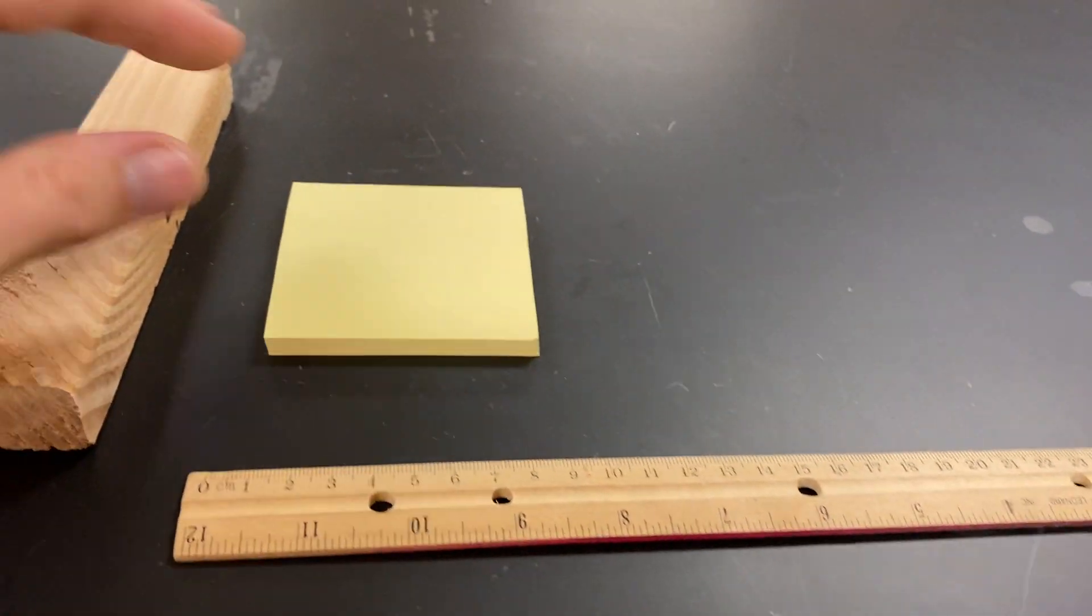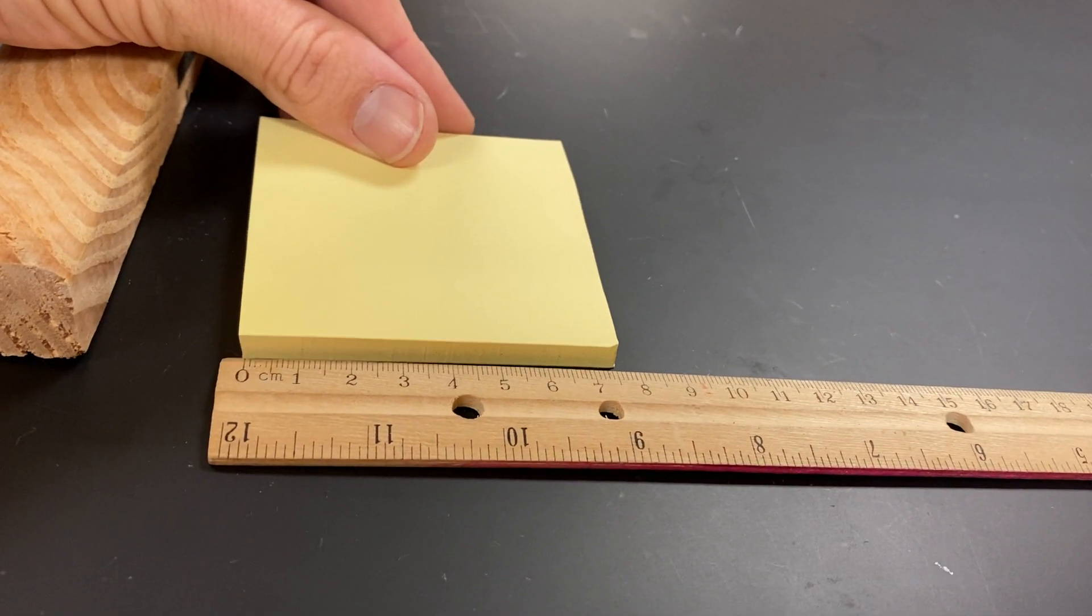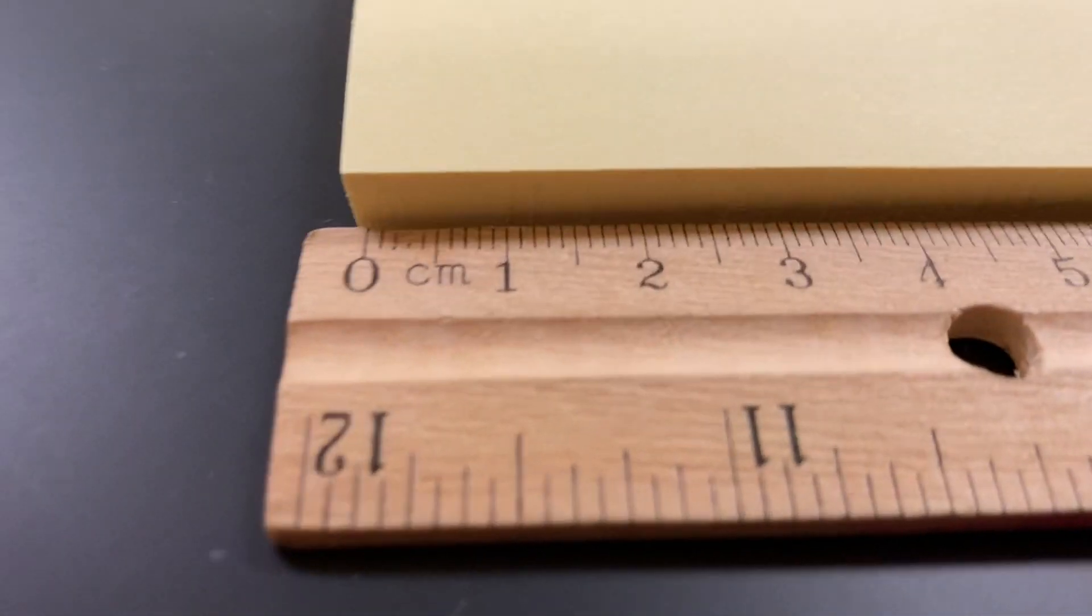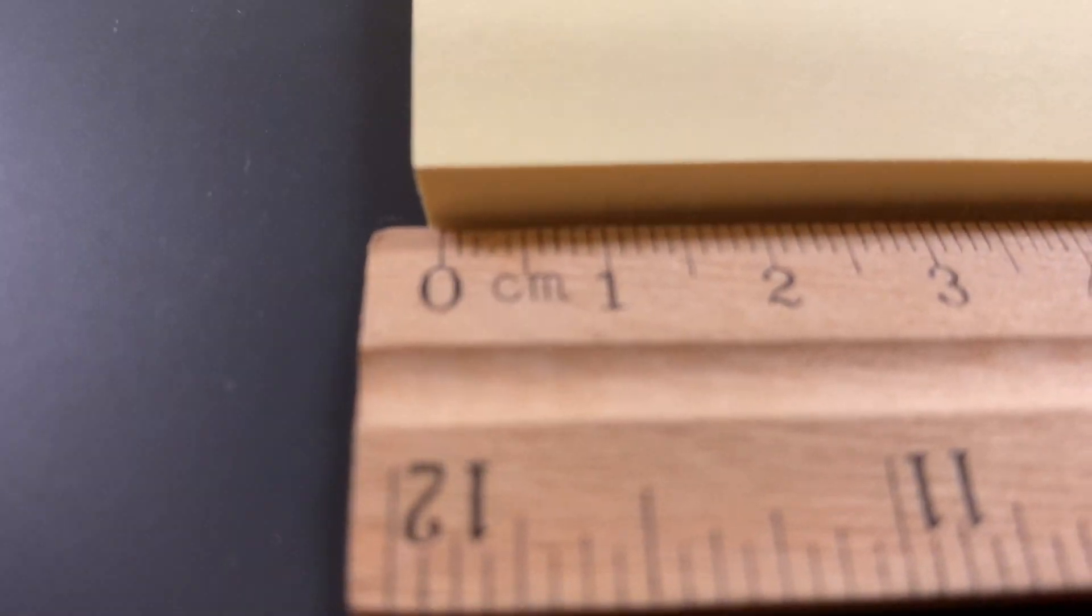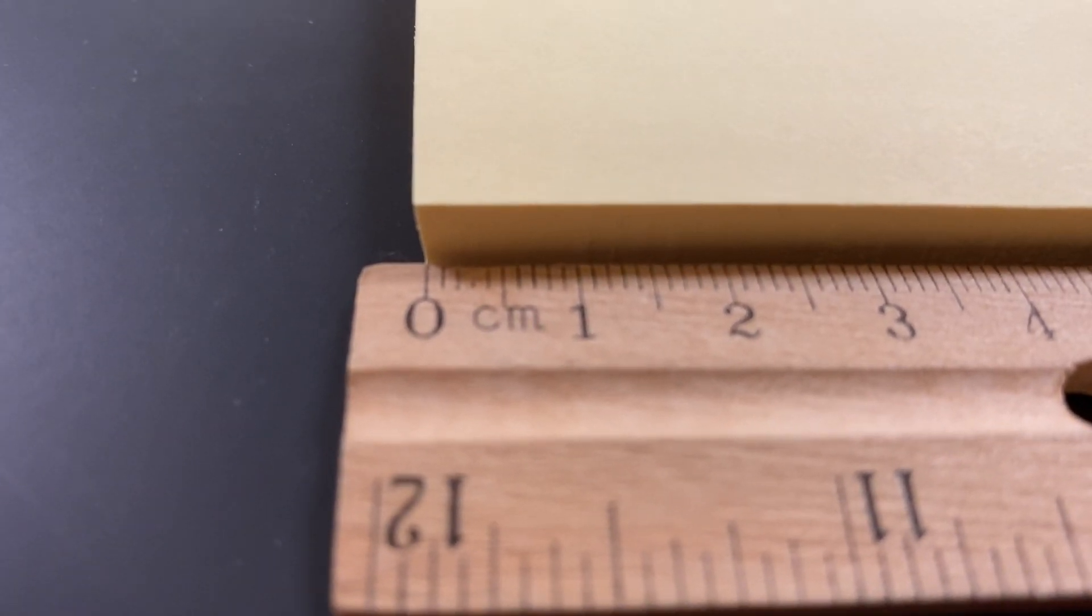First thing we're going to do is line up our object with the zero over here on the left. So right there, notice that I tried to line up the sticky pad with the zero. Perhaps it can go just over a bit, and there we are at the zero.